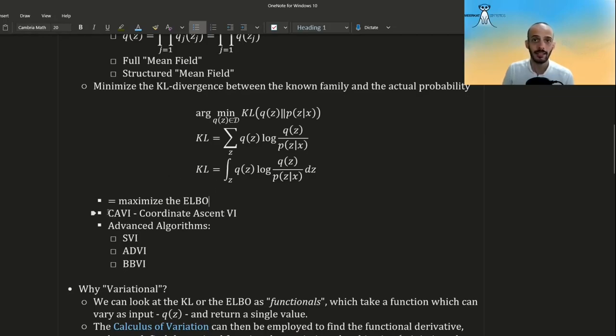And if we do this, we can come up with an algorithm, the main analytical algorithm if you may, which is called coordinate ascent variational inference, CAVI. And for it, we have to, for each problem, calculate analytically the algorithm, the calculations, and then code it.